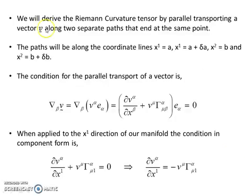The paths will be along the coordinate lines x1 is a, x1 is a plus delta a, x2 is b and x2 is b plus delta b, as you saw in the previous diagram. Our closed path on the manifold is a very small one — we are talking about an infinitesimally small path.